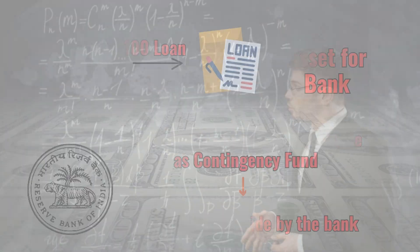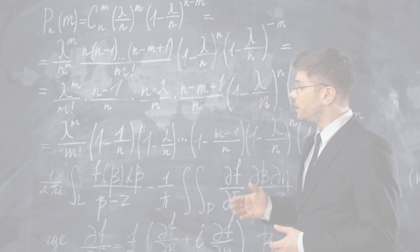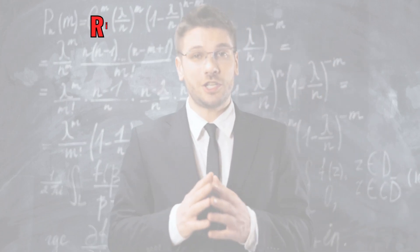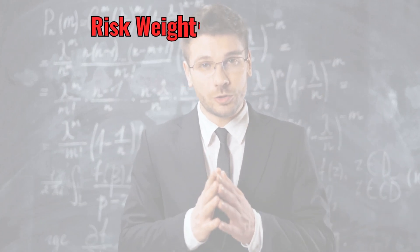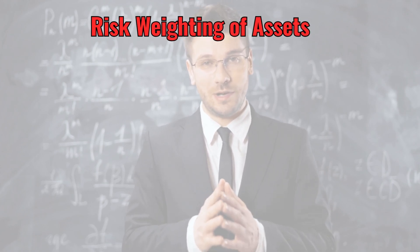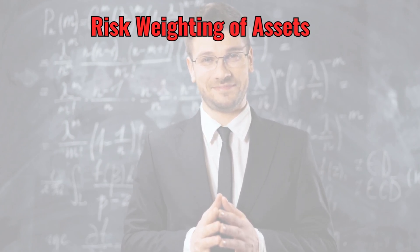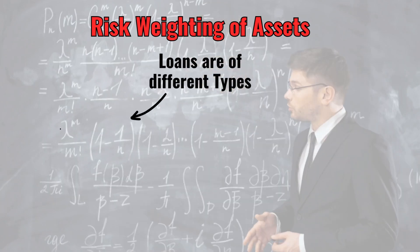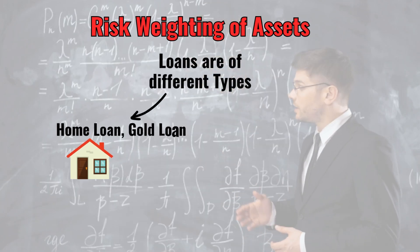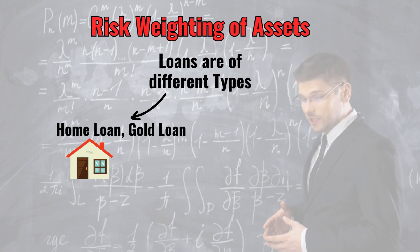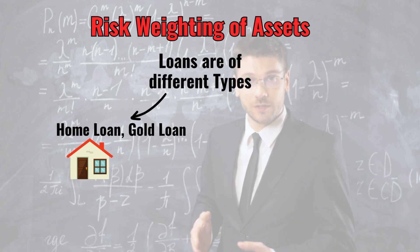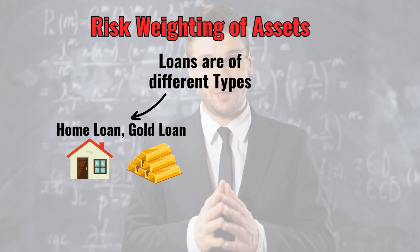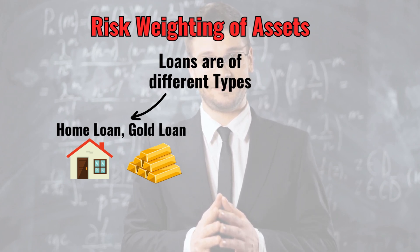That seems quite sensible, right? But hold on, it's actually a little more complicated than that. The regulators have something called risk-weighting of assets. This simply means that they don't believe all loans are equal. For instance, if a bank doles out a home loan, it can always repossess the home if there is a default. It's the same thing with a gold loan — there's collateral involved.